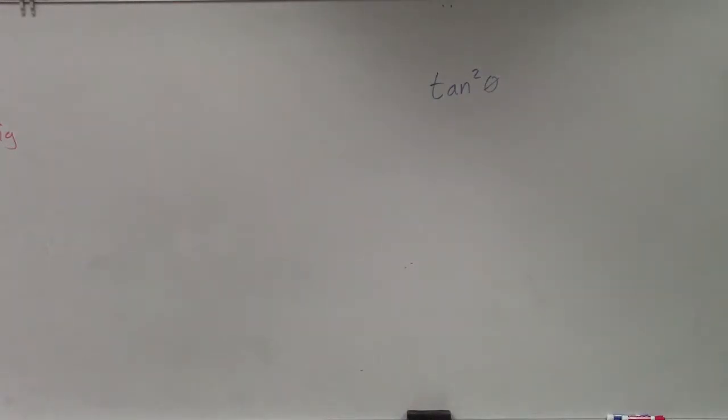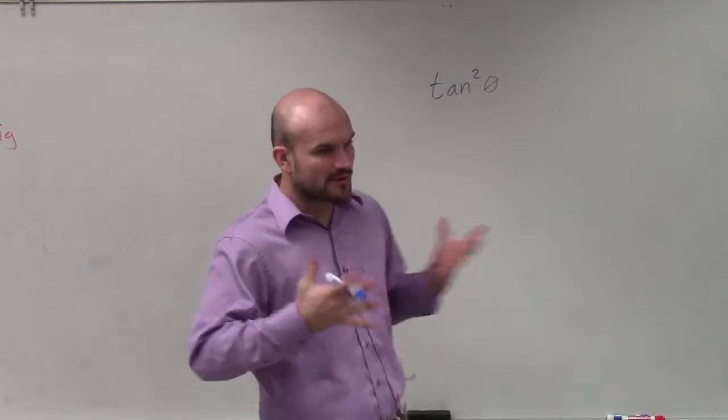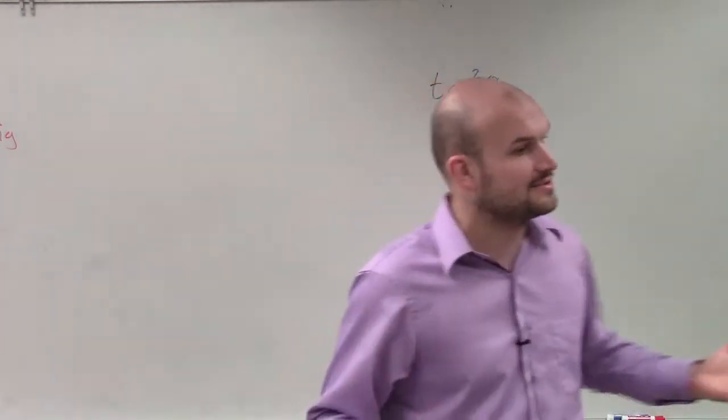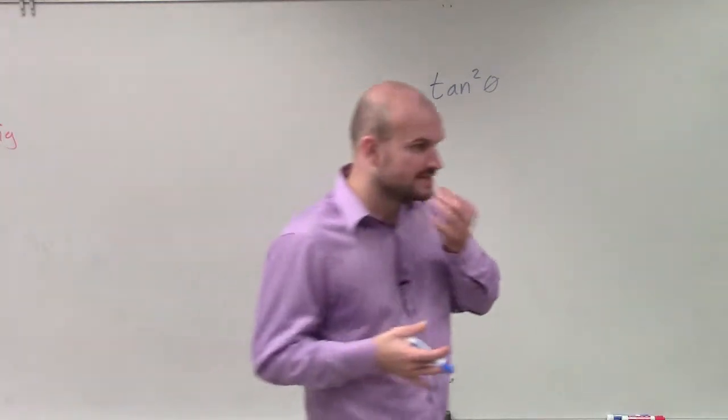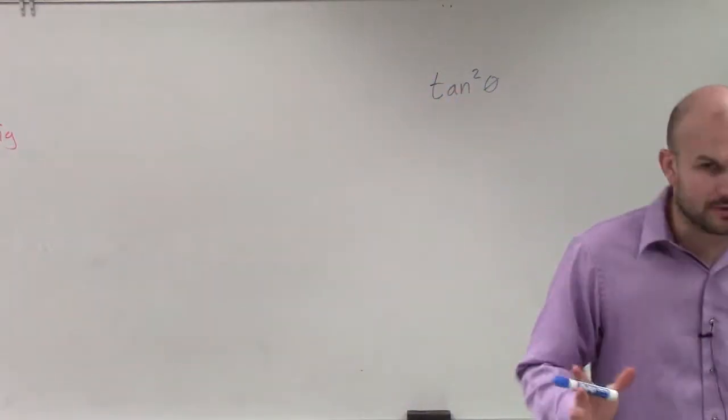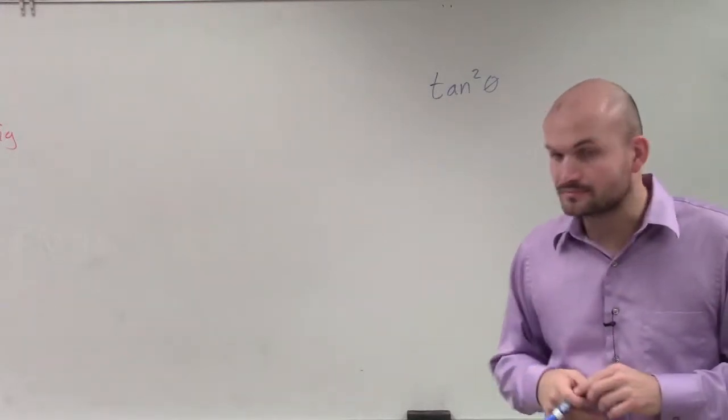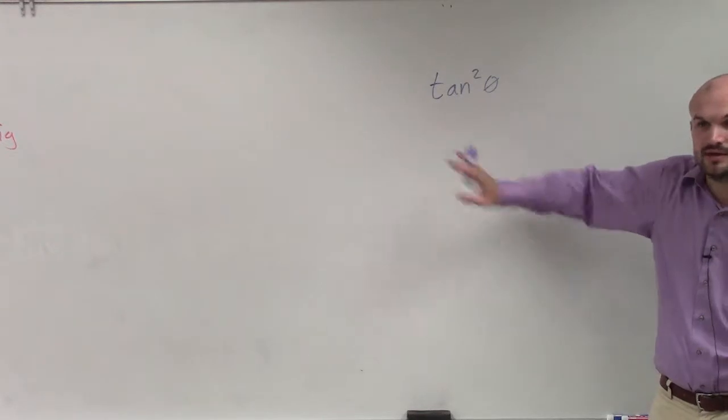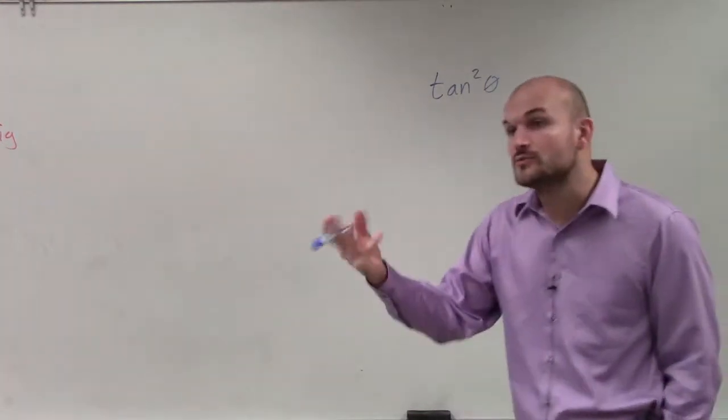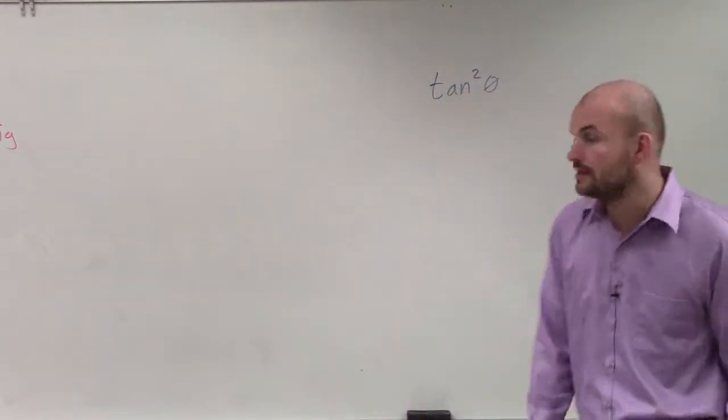So the first thing that I want to talk about is tangent squared. And here's the whole reason why we're going to be using these identities. I gave you all those different identities, and what I want you guys to understand is there's not just one way to do it. There's going to be a lot of different options you guys can look at. So for instance, if I gave you a problem that has a tangent squared in there, there's really kind of three avenues that you guys can go ahead and work on.